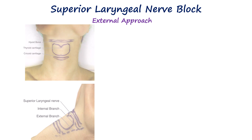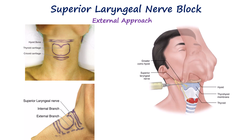The superior laryngeal nerve can be blocked using the external or the internal approach. For the external approach, the patient is placed in the supine position with some degree of neck extension to facilitate identification of the hyoid bone. Once identified, the hyoid bone is gently displaced to the side where the block is to be performed, and a 25 gauge needle is inserted from the lateral side of the neck aiming towards the greater cornu. Upon contact with the greater cornu of the hyoid bone, the needle is walked off the bone inferiorly, where 2 ml of 2% lidocaine is injected. This single injection will block both the internal and external branches of the superior laryngeal nerve. If the needle is advanced further, it can pierce the thyrohyoid membrane, and injecting local anesthetic there will result in only the internal branch being blocked.